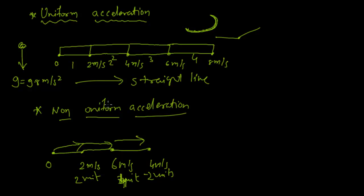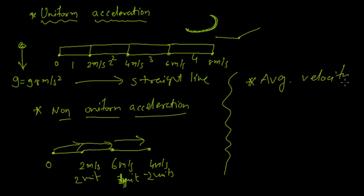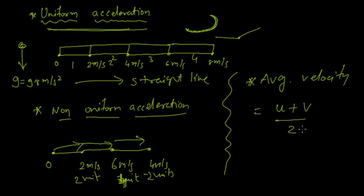Now that we know the concept of initial velocity and final velocity, we can determine average velocity. As I discussed in the previous video, it is a bit difficult to define, but for a special case — when a body is undergoing uniform acceleration — average velocity = (initial velocity + final velocity) / 2, i.e., (u + v) / 2. This relation holds true for uniformly accelerated motion. That was all about acceleration, thank you.